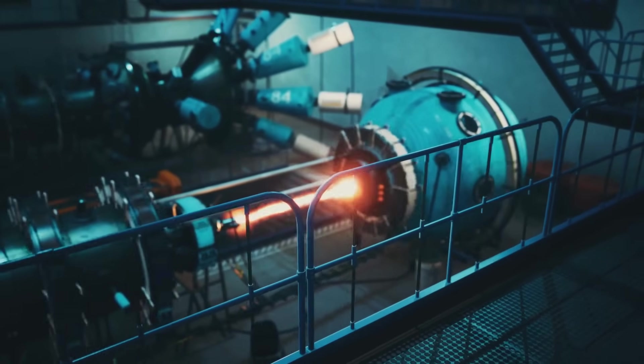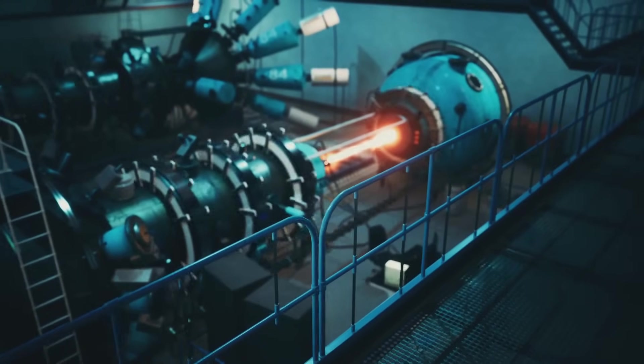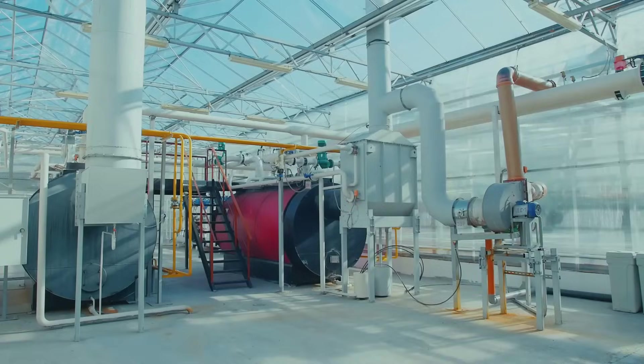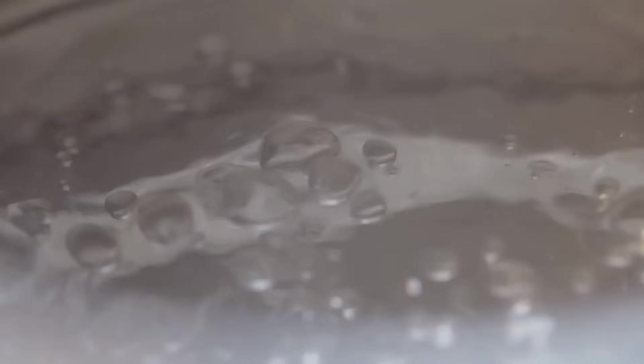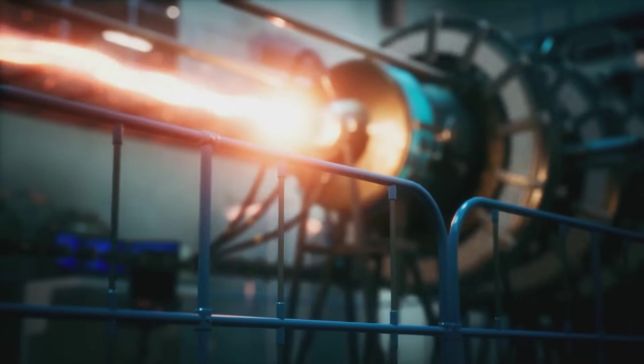Control rods made of neutron-absorbing materials are inserted to manage the reaction. The heat from fission is absorbed by coolant, usually water, kept under high pressure. This superheated water flows to a steam generator, where it heats a separate loop of water into steam. The steam spins a massive turbine, which turns a generator to make electricity.